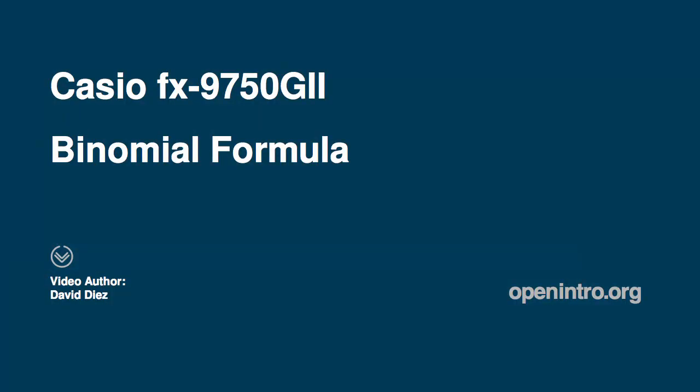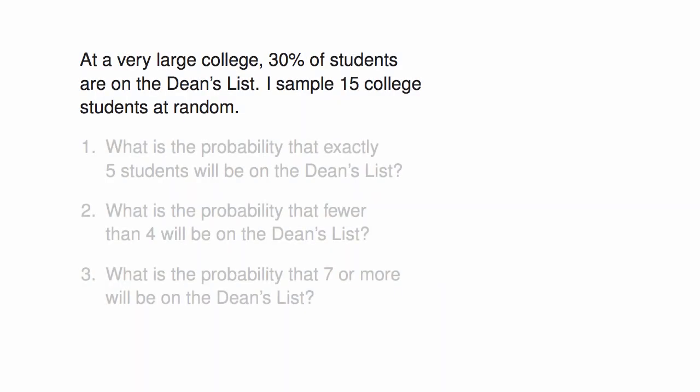I'm going to cover three binomial distribution problems using the Casio 9750 Graphing Calculator. Suppose at a very large college, 30% of students are on the Dean's List, and I sample 15 college students at random.